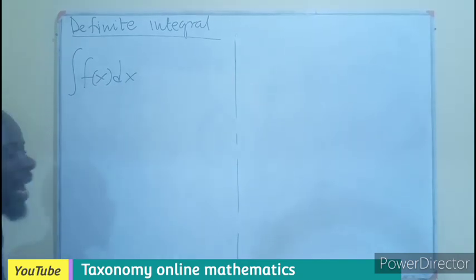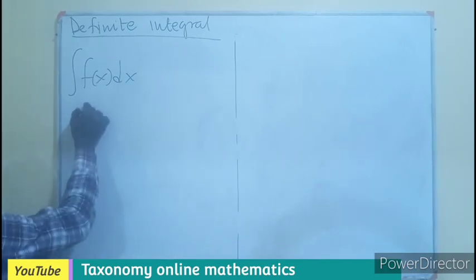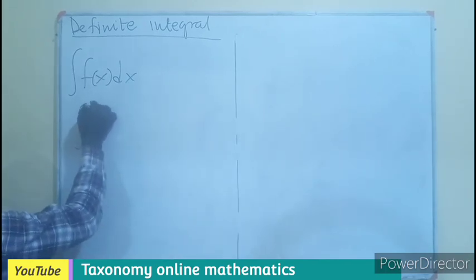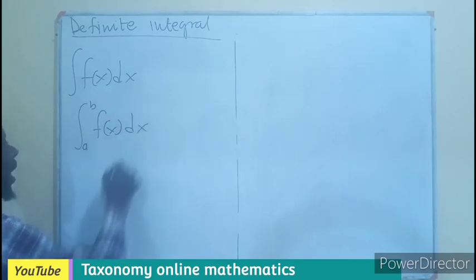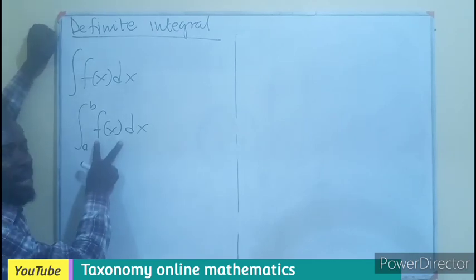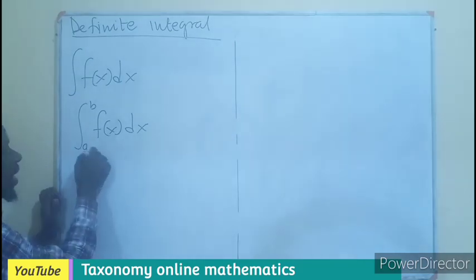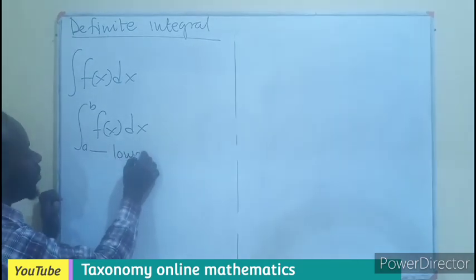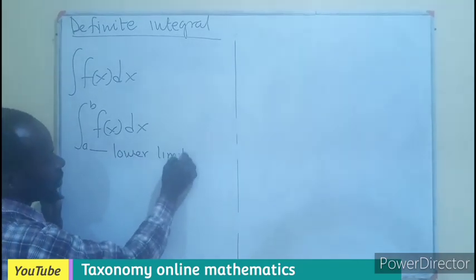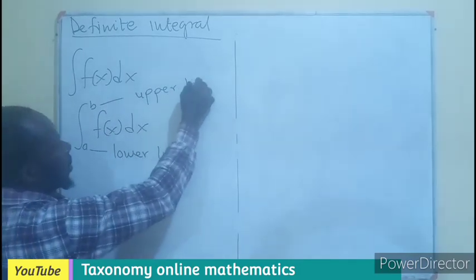Now, the case where a limit to the integration is given, as an integral from A to B of f dx. This is telling us that the integration of the function is from A to B, where A is our lower limit, then B is going to be our upper limit.